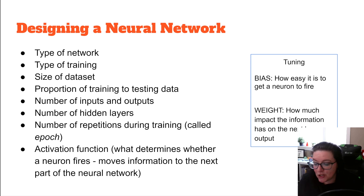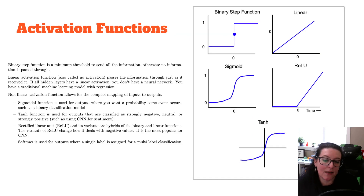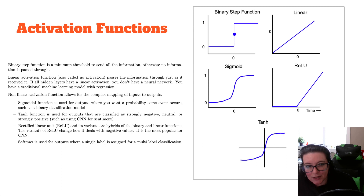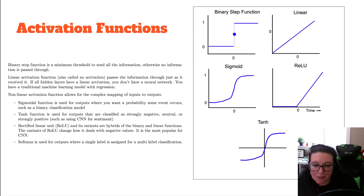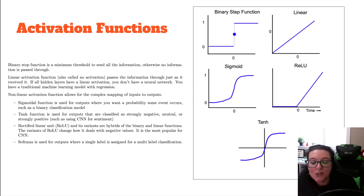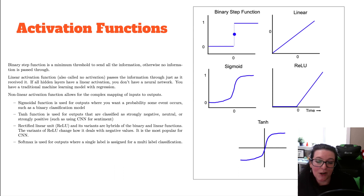We also need to decide on the activation function. Recall there is a binary step function where, once the minimum threshold is met, the information passes through — otherwise it's ignored. There's a linear activation function where information is passed as received. Nonlinear options include the sigmoidal function, used when we have a probability of an event such as binary classification; the tanh function, used for strongly negative, neutral, or strongly positive classifications like sentiment analysis; rectified linear units, a variant of the binary and linear function often used inside hidden layers; and softmax, used for multi-label classification.